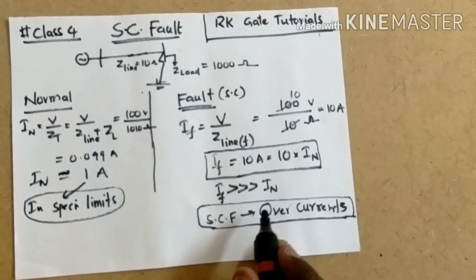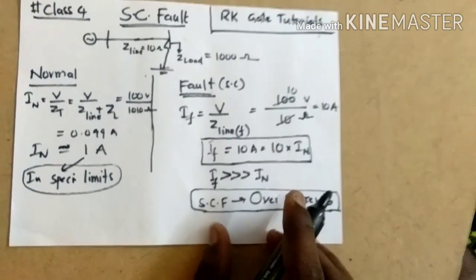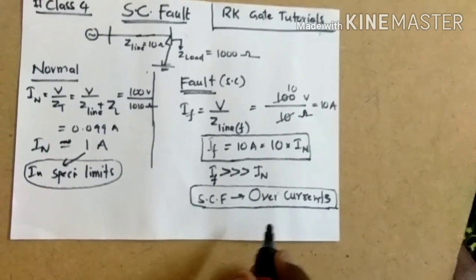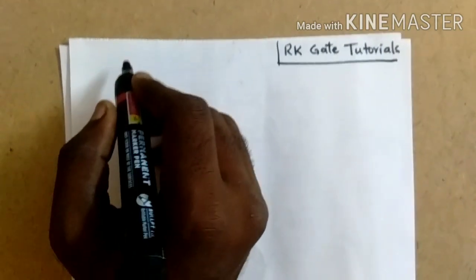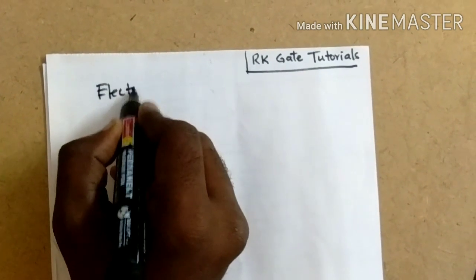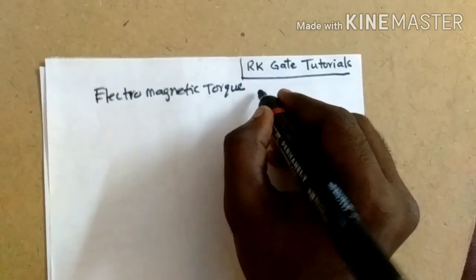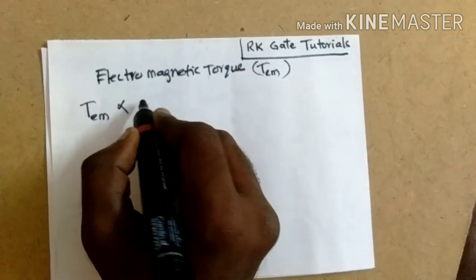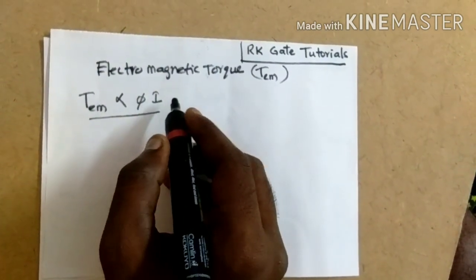Due to the short circuit fault, there is a flow of over-currents in the circuit. This is the consequence of the short circuit fault. Now, what happens when over-current flows? We know that electromagnetic torque T_EM is directly proportional to the current.